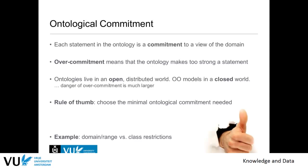There's an example with object-oriented models in software engineering: these are more closed-world because they live in a software system where the domain and scope are very limited. If the world changes, the system just doesn't work anymore, but it is still correct as designed. With ontologies, they talk about the world, which is often not designed and can change a lot. So the rule of thumb is that you want minimal ontological commitments.